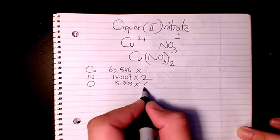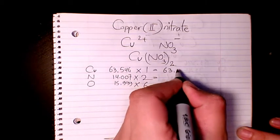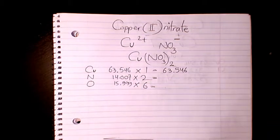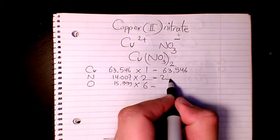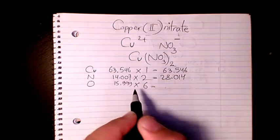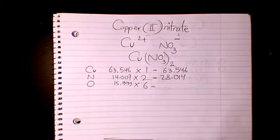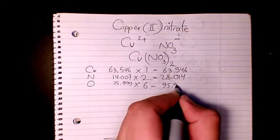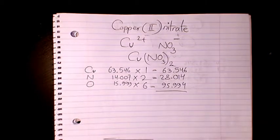So we have 63.546 for copper, then here we have 28.014 for nitrogen, and 15.999 times six is 95.994 for oxygen. So when you add them all...